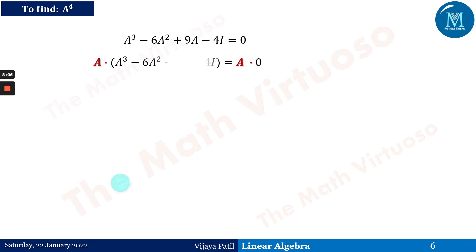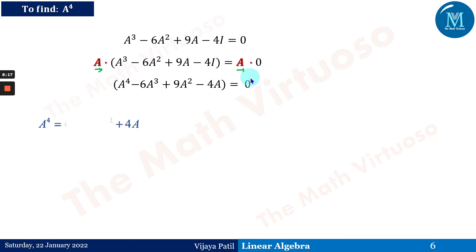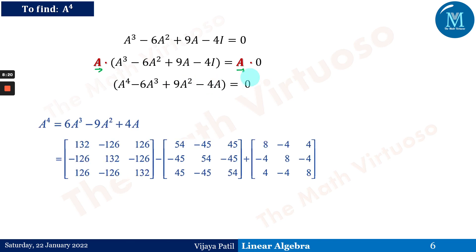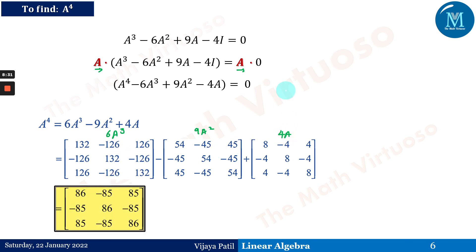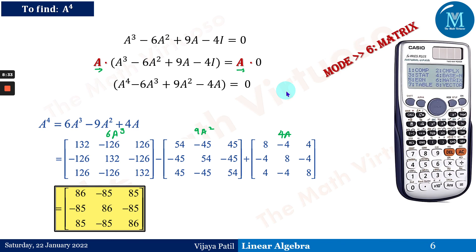To find A to the power 4, the same approach is used: instead of pre-multiplying by A⁻¹, we pre-multiply by A. This gives A⁴ - 6A³ + 9A² - 4A = 0, so A⁴ = 6A³ - 9A² + 4A. Substituting the values gives the result. This can also be done using the calculator matrix mode — please follow the series for that.